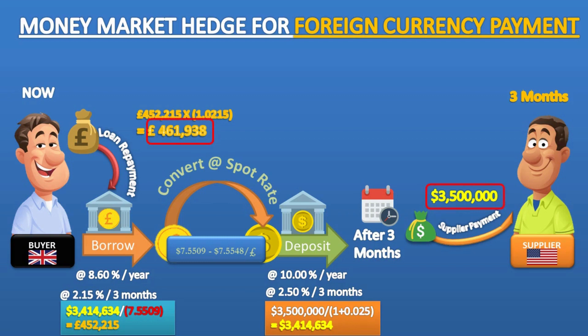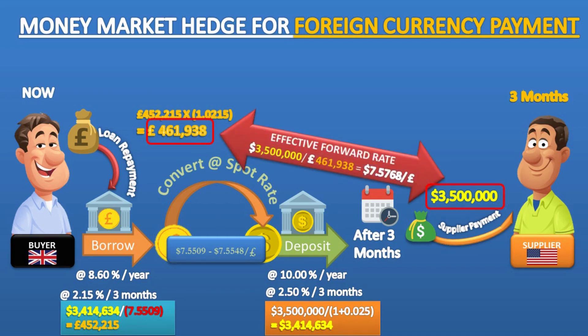The effective forward rate which the company has manufactured is 7.5768 dollars per pound. This effective forward rate shows the dollar at a discount to pounds because the dollar interest rate is higher than the pounds rate.